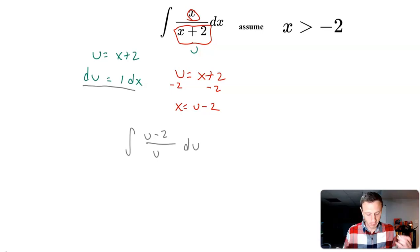So now we just have a pretty straightforward integral. I could just rewrite this as u minus 2 over u du, because I'm just taking fractions.